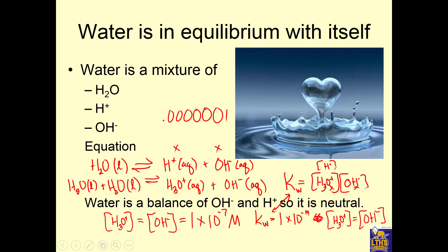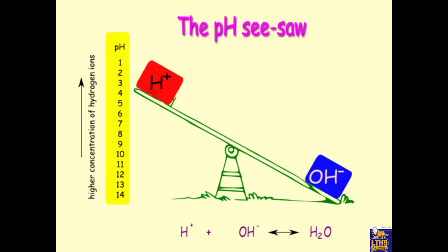That's a small amount of hydrogen ion and hydroxide ion, and they equal each other — that's why water is neutral. So instead of working with a number like that, we say the pH is the negative log of that number, 1 times 10 to the negative 7, and we find that pH equals 7. Water's pH is 7 because it has equal amounts of hydrogen ion and hydroxide ion.